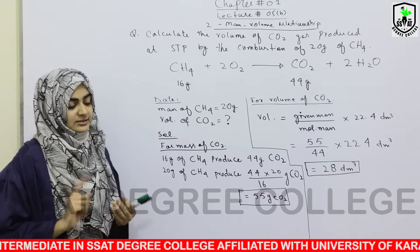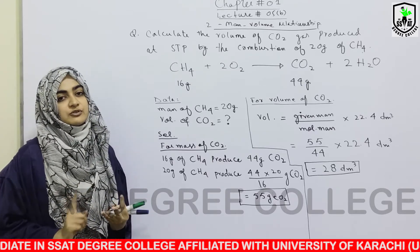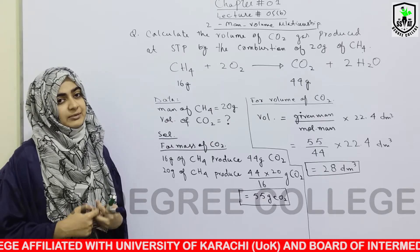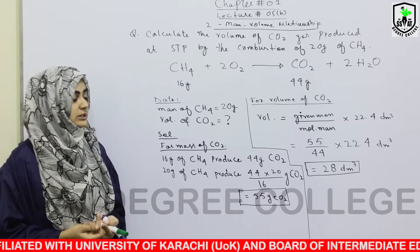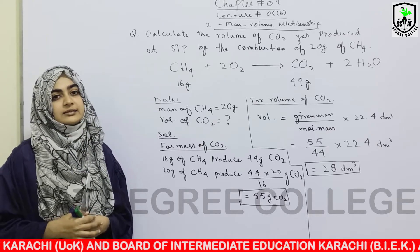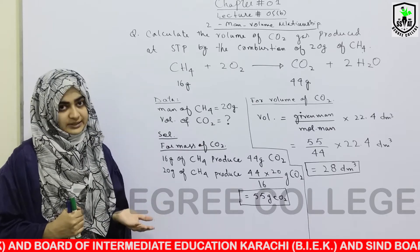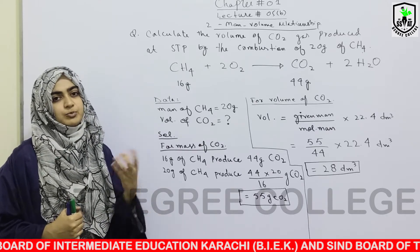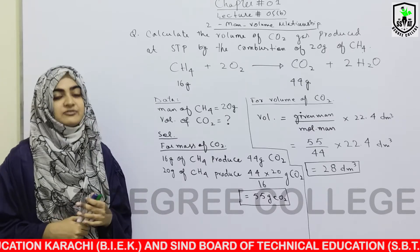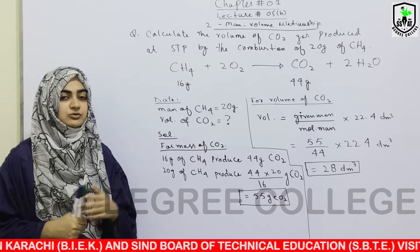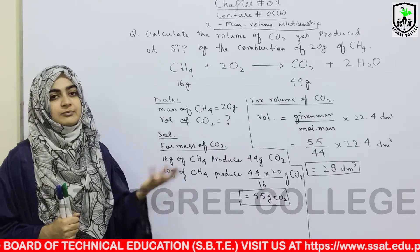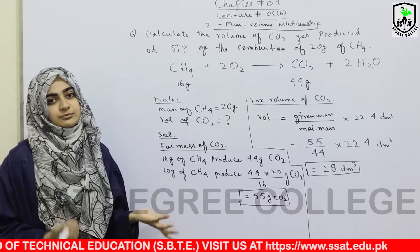अब आपने कैसे distinguish करना है कि यह numerical mass-mass relationship के थ्रू होगा या mass-volume के थ्रू होगा? जो पिछली example हमने देखी थी उसमें आपको mass given था एक reactant का, और आपको product का mass ही find out करना था, तो direct आपने mass से mass निकाल लिया — तो यह mass-mass relationship का numerical था।